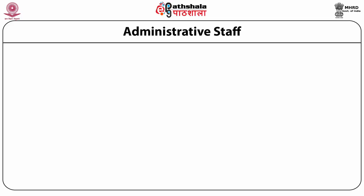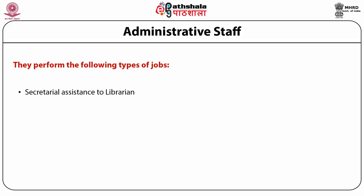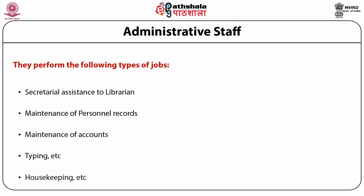The third category of staff in university library is the administrative staff, which performs the following jobs: secretarial assistance to librarian, maintenance of personal records, maintenance of accounts, typing, housekeeping, etc.